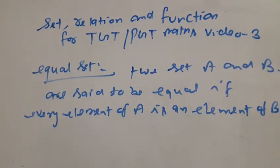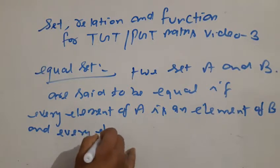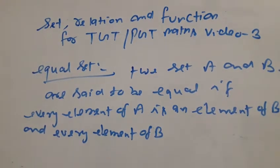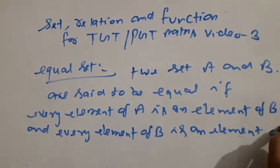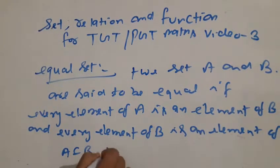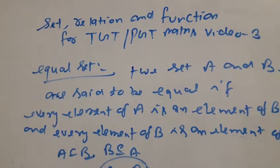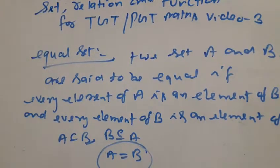Meaning: every element of B is an element of A, and every element of B is an element of A. So if A is a subset of B and B is a subset of A, then A is equal to B.